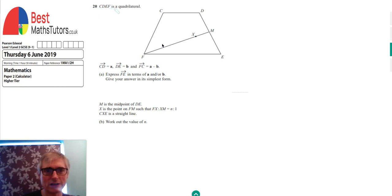We're given this shape CDEF and we're given parts of the lines that make it up in terms of A's and B's. So the first thing I'm going to do is put them onto our diagram. We can see CD is A, DE is B, and FC is A minus B.